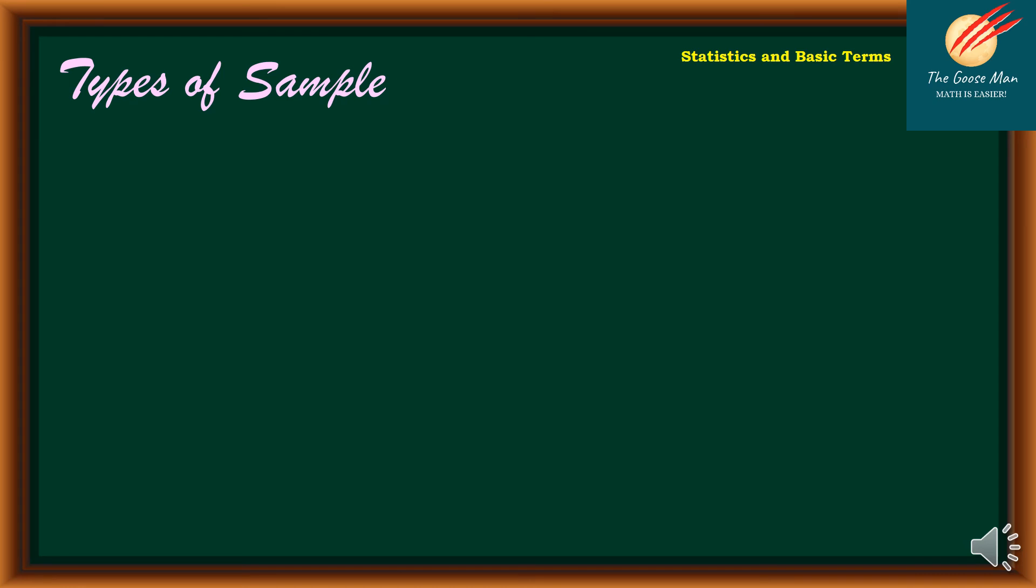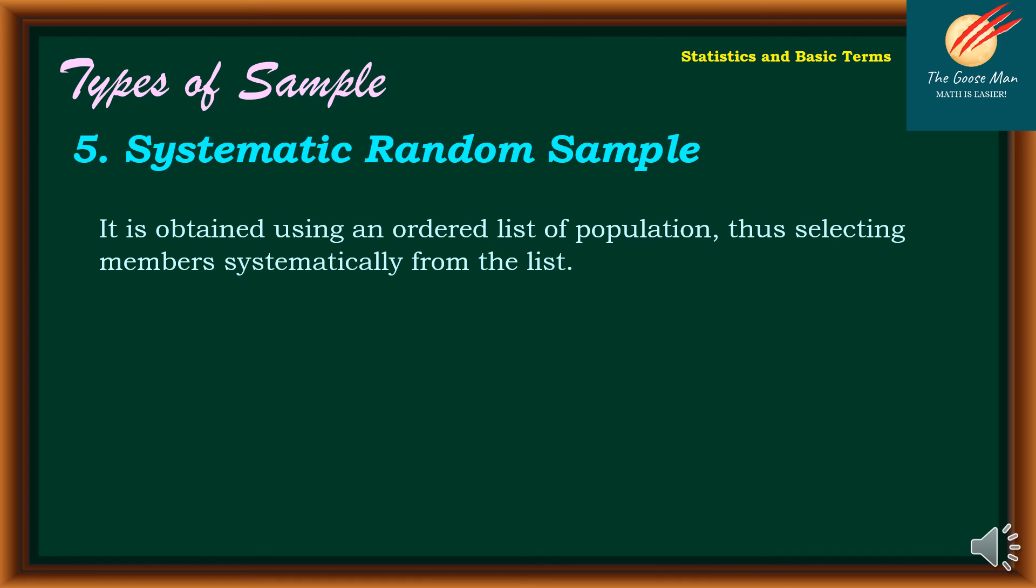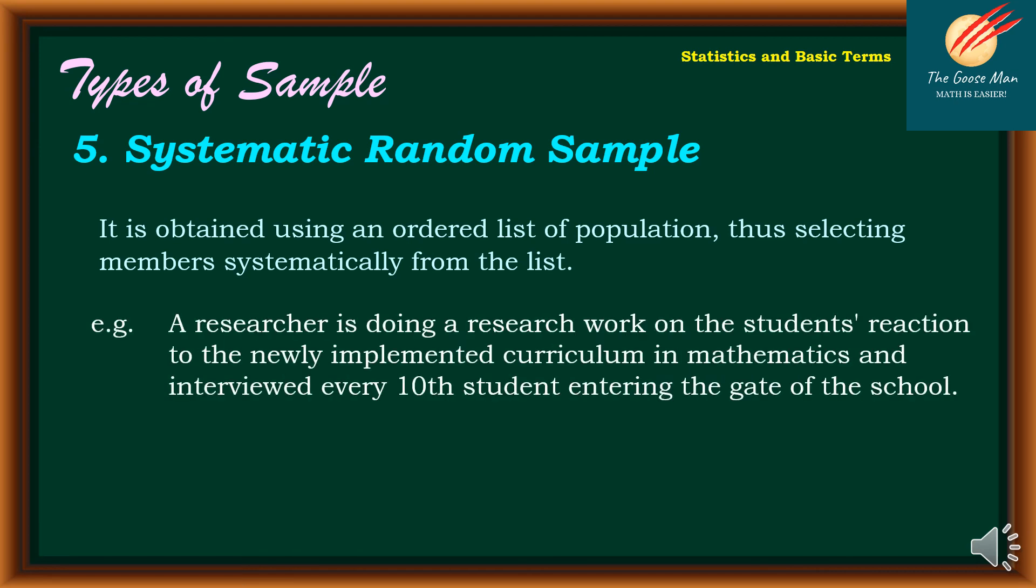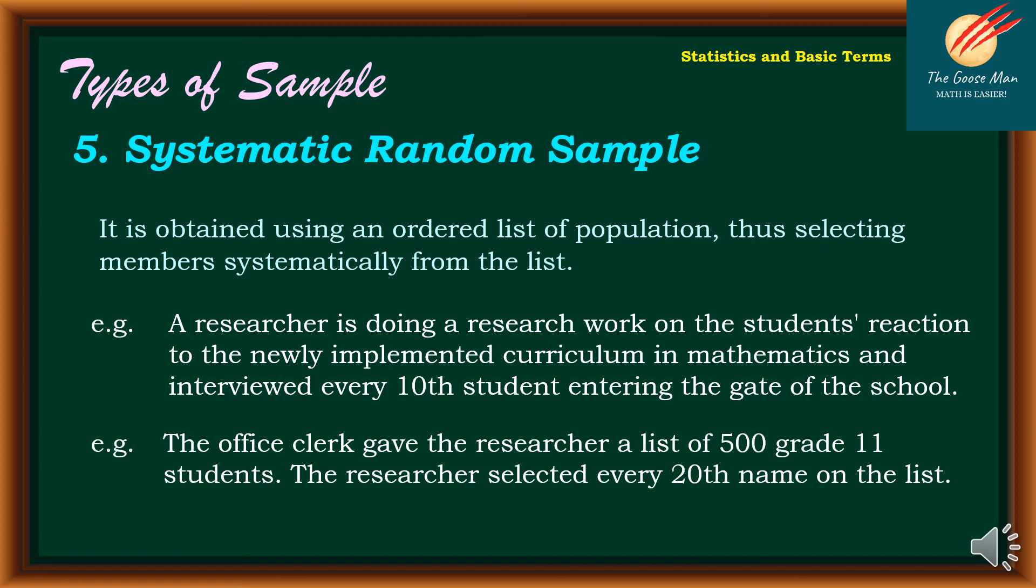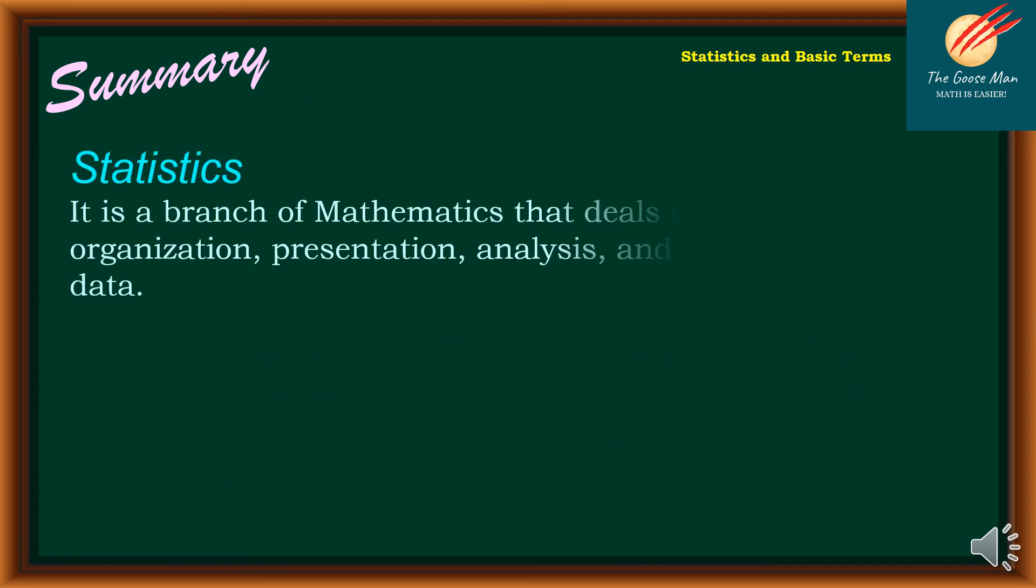The fifth type is systematic random sample, obtained using an ordered list of population, selecting members systematically from the list. For example, a researcher interviewed every tenth student entering the school gate. Another example: the office clerk gave researchers a list of 503 students; the researcher selected every 20th name on the list.